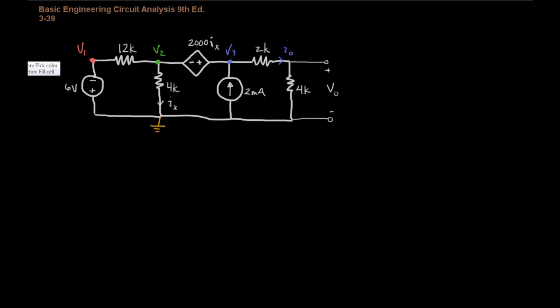So V1 is simple because V1 doesn't really require a KCL equation. V1 is negative 6 volts.